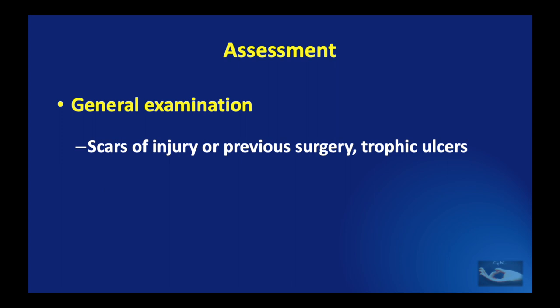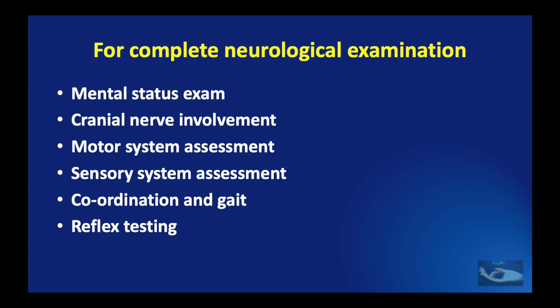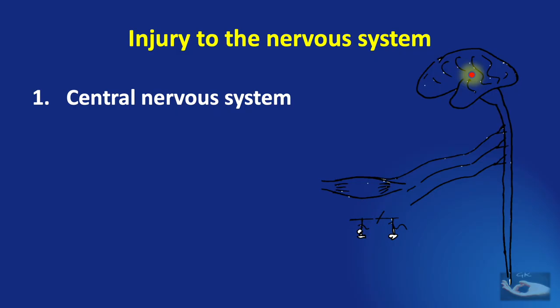After getting a thorough history, we need to do a general examination and look for scars of injury or previous surgery. Trophic ulcers and healed ulcers on the fingers or feet are telltale signs of a peripheral nerve problem. A detailed neurological examination consists of six steps: assessment of mental status, cranial nerve involvement, motor system, sensory system, coordination and gait analysis, and reflex testing. Since we are concentrating on peripheral nerve problems, this video will deal mainly with motor and sensory system assessment.